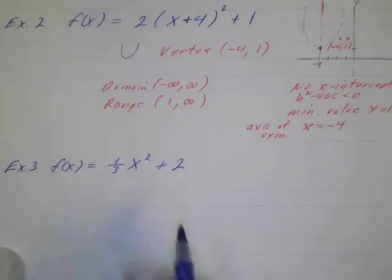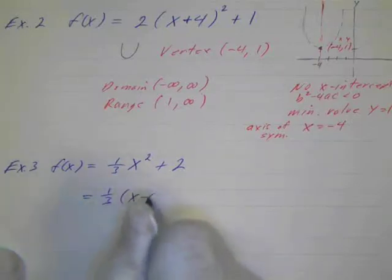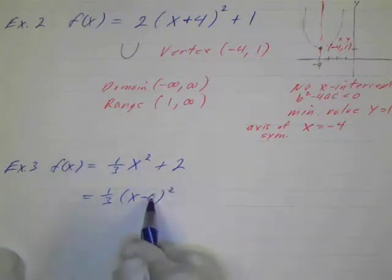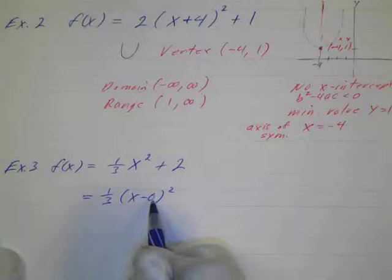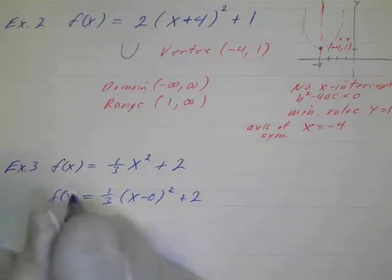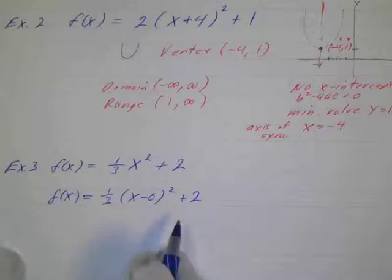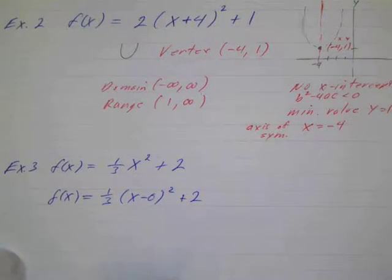But x squared is the same thing, so what you could do is you could actually rewrite this as one-third times x minus 0 squared. So our vertex has a 0 for the x value plus 2. So if it's a little bit easier for you to write it like this, try that.